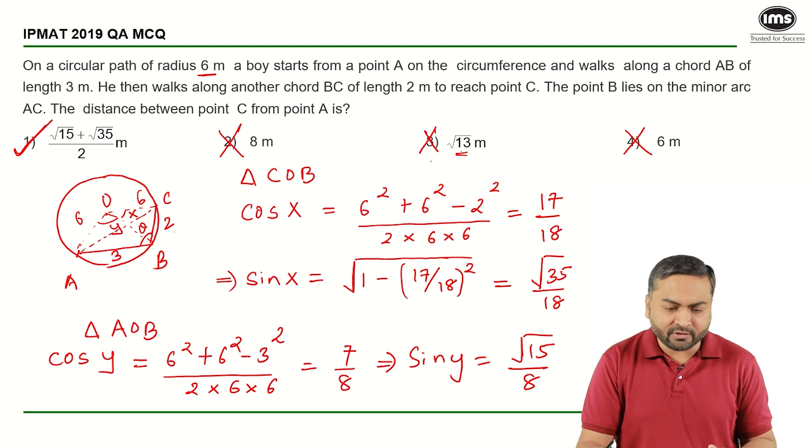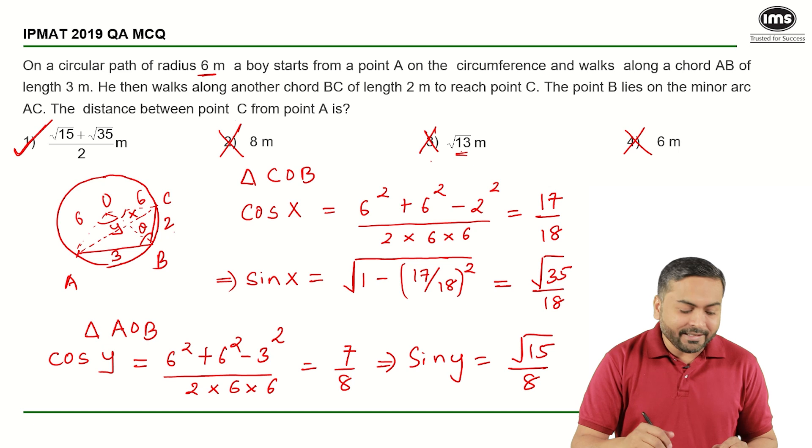So now I have sin x, cos x, I have sin y and cos y. So how can I find the length AC?